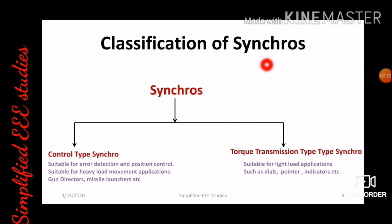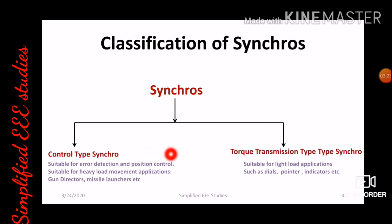Now let us discuss the classification of synchro. Synchros can be classified into two types: control type synchro and torque transmission type synchro. Control type synchro is mainly suitable for error detection and position control. Moreover, it is suitable for heavy load movement applications such as gun directors, missile launchers, and underwater detector systems.